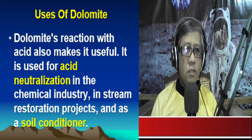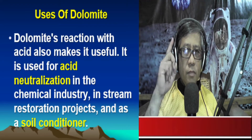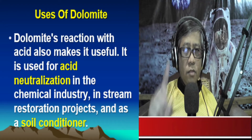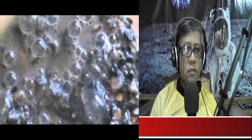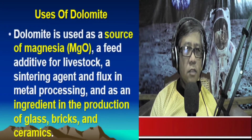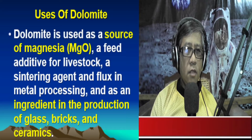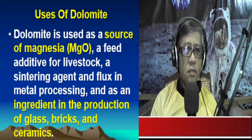Let us now examine the physical properties of dolomite. In terms of cleavage, dolomite has three directions of perfect cleavage, as you can see in the picture. In terms of hardness, dolomite has a Mohs hardness of 3.5 to 4. In terms of fizz, dolomite produces a very weak reaction to cold dilute hydrochloric acid. However, if the acid is warm or if the dolomite is powdered, a much stronger acid reaction will be observed. Powdered dolomite can easily be produced by scratching it on a streak plate.